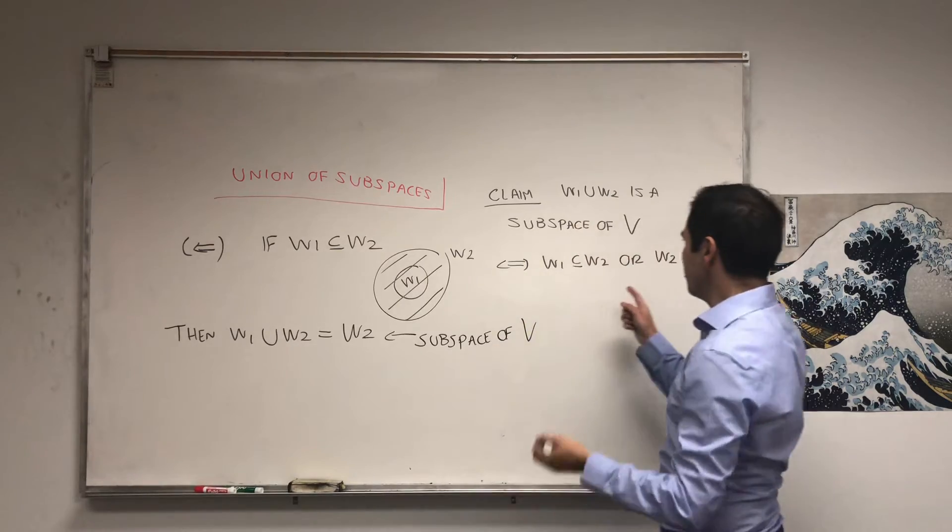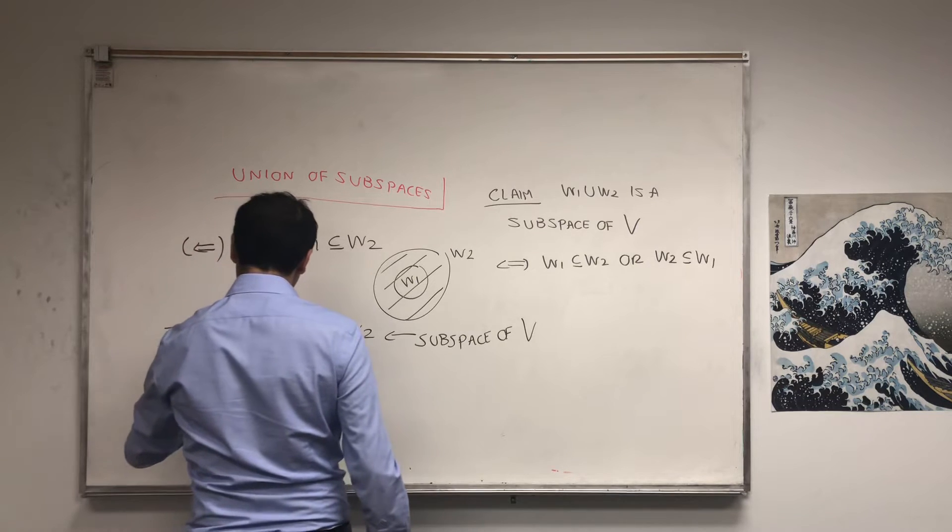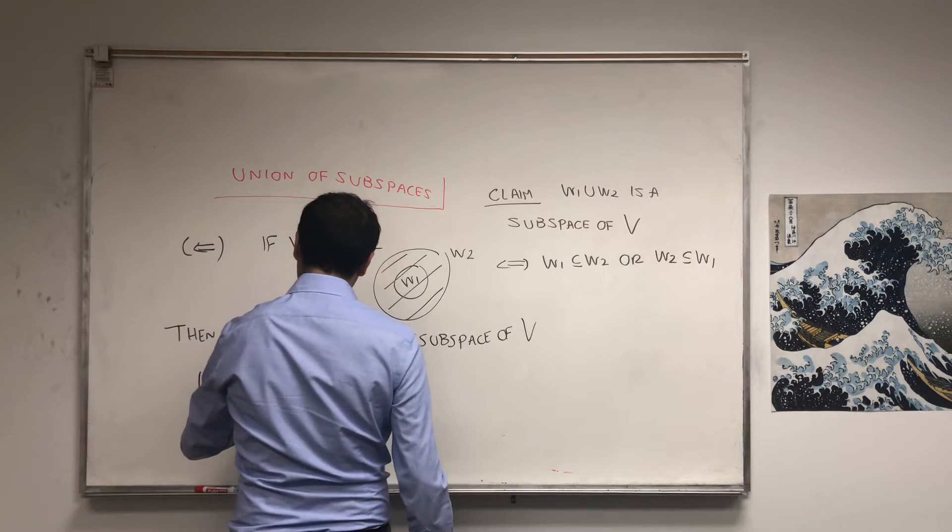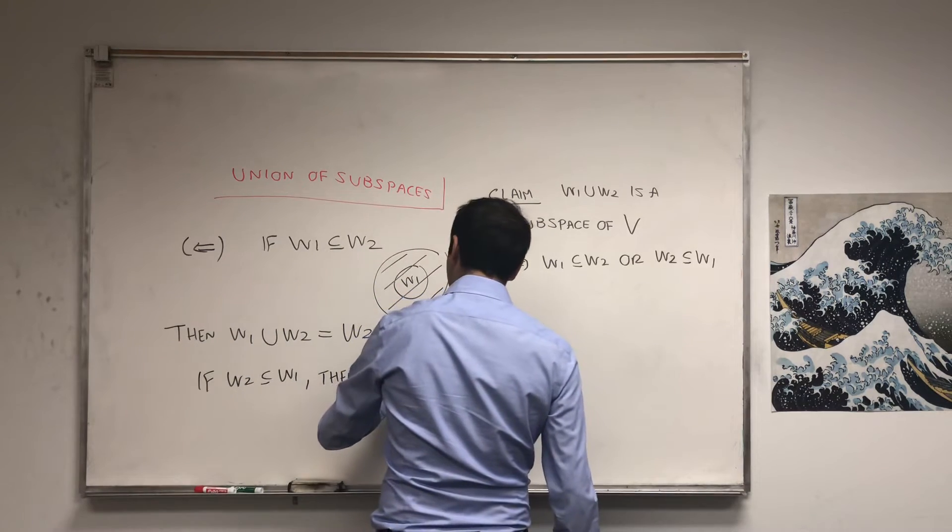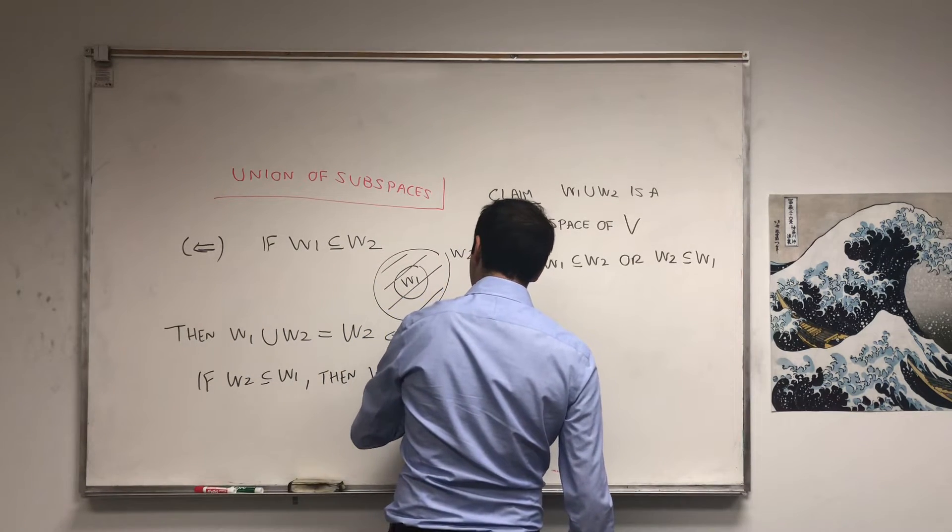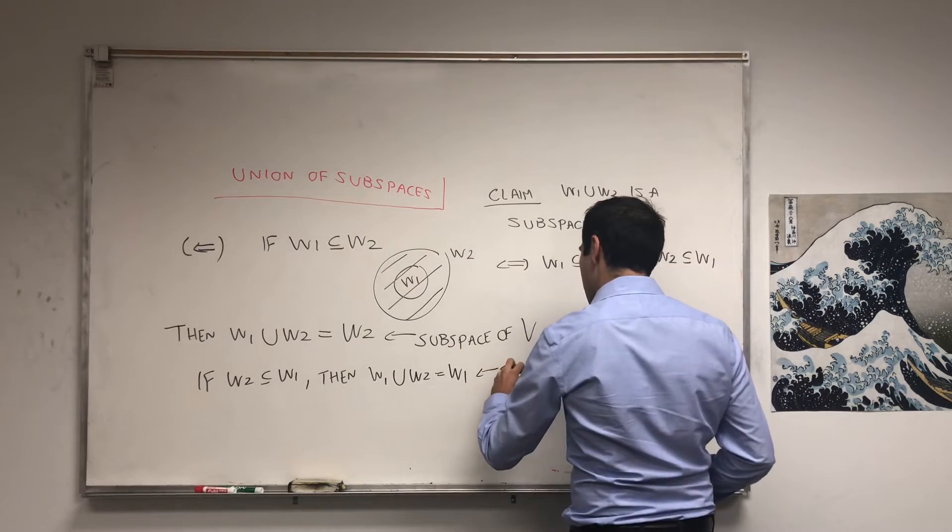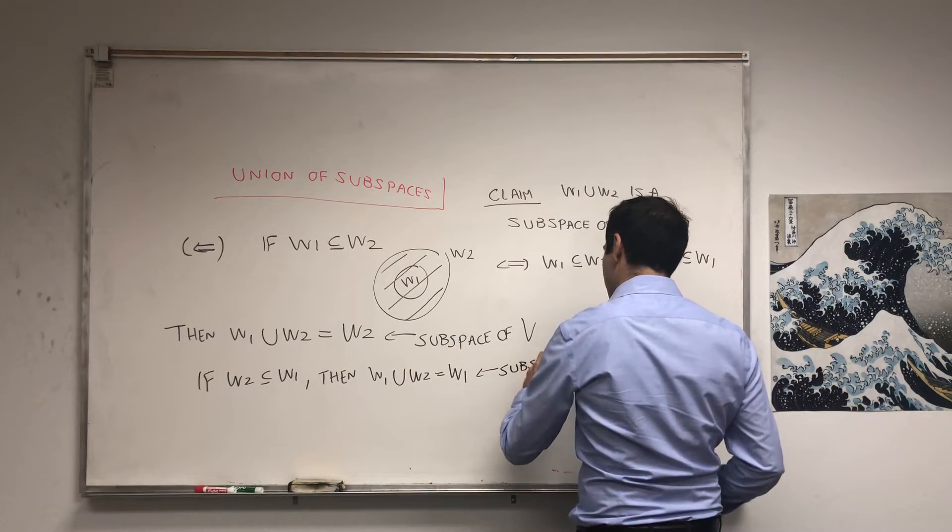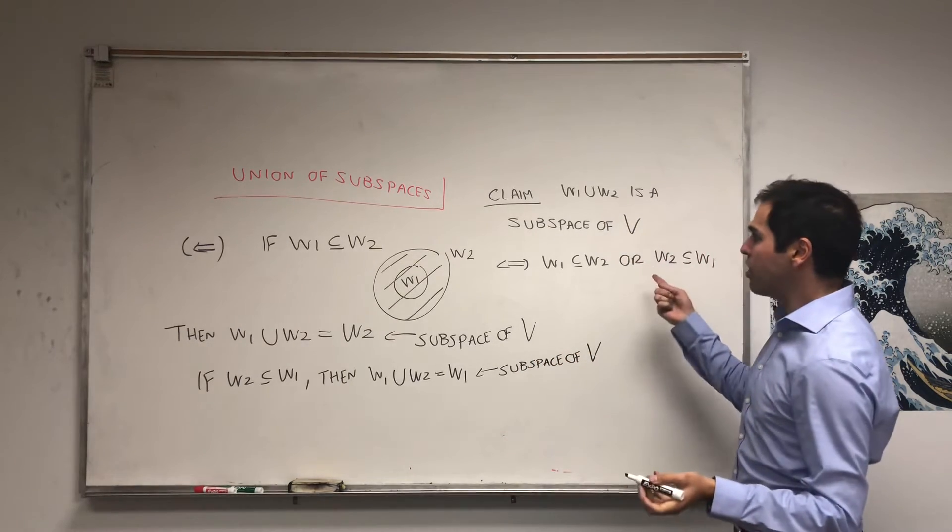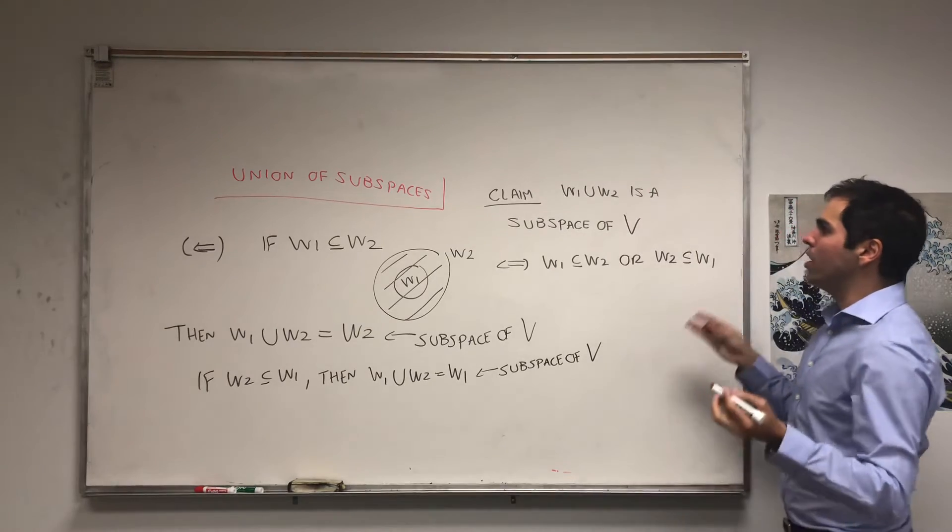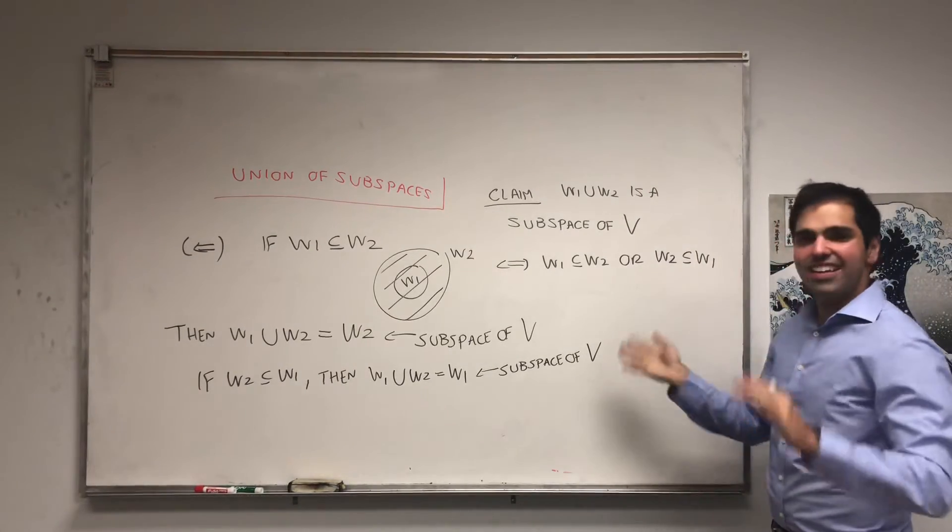And similarly, if W2 is included in W1, then W1 union W2 in that case is W1, which is still a subspace. So in both cases, W1 union W2 is a subspace. So this case is trivial.